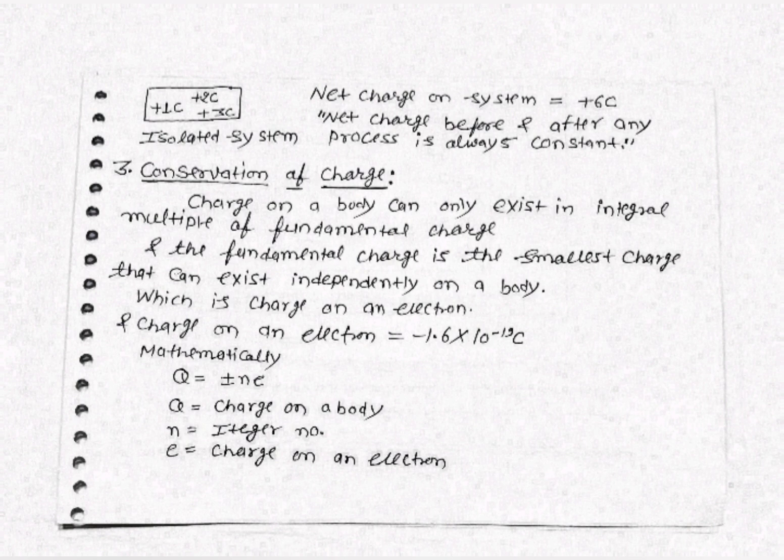The third property is quantization of charge. Charge on a body can exist only as an integral multiple of the fundamental charge. The fundamental charge is the smallest charge that can exist independently on a body, which is the charge on an electron: minus 1.6 × 10⁻¹⁹ coulombs. Mathematically, q = ±ne, where n is an integer and e is the charge on an electron. Quantization means any charge that exists in this universe has to be an integral multiple of the charge on an electron.